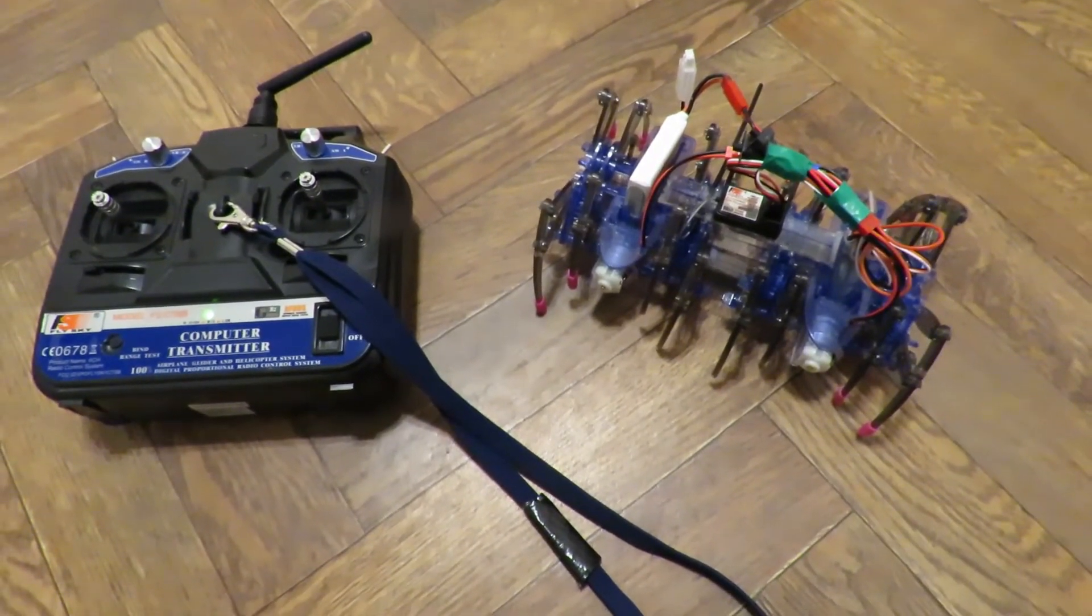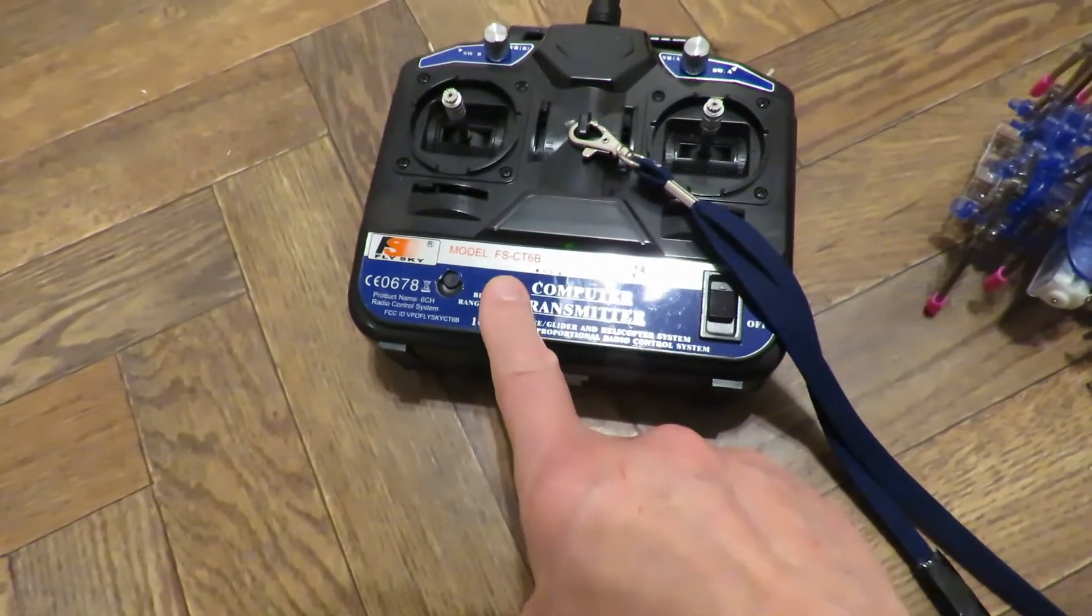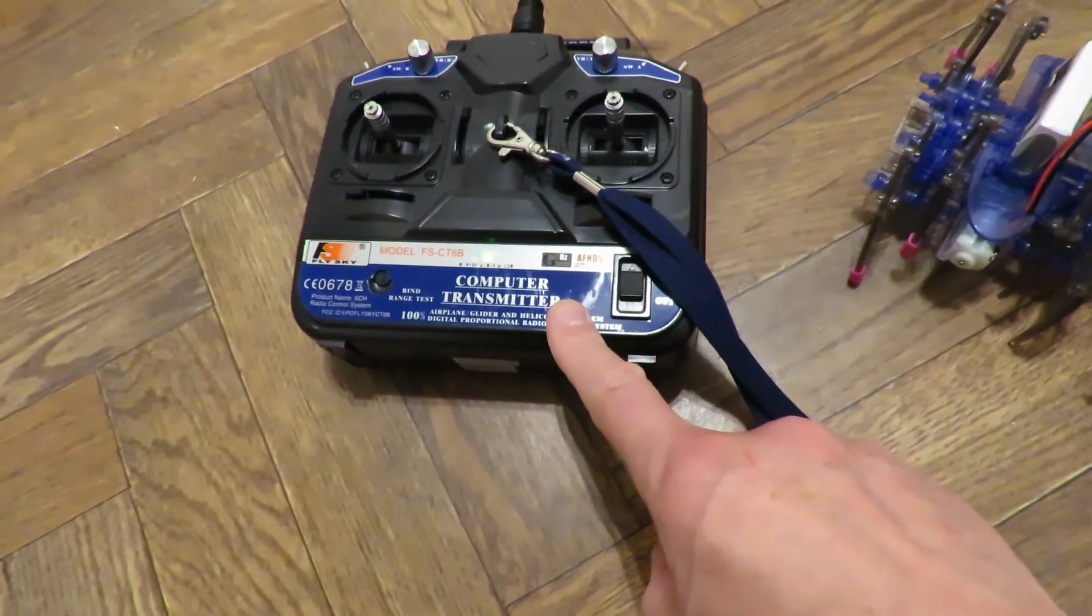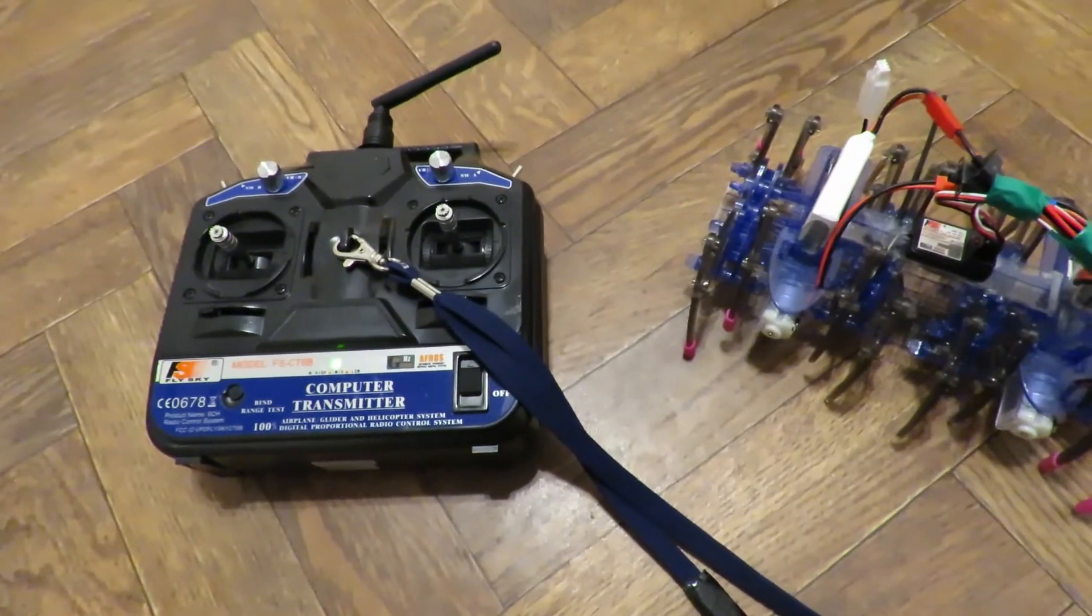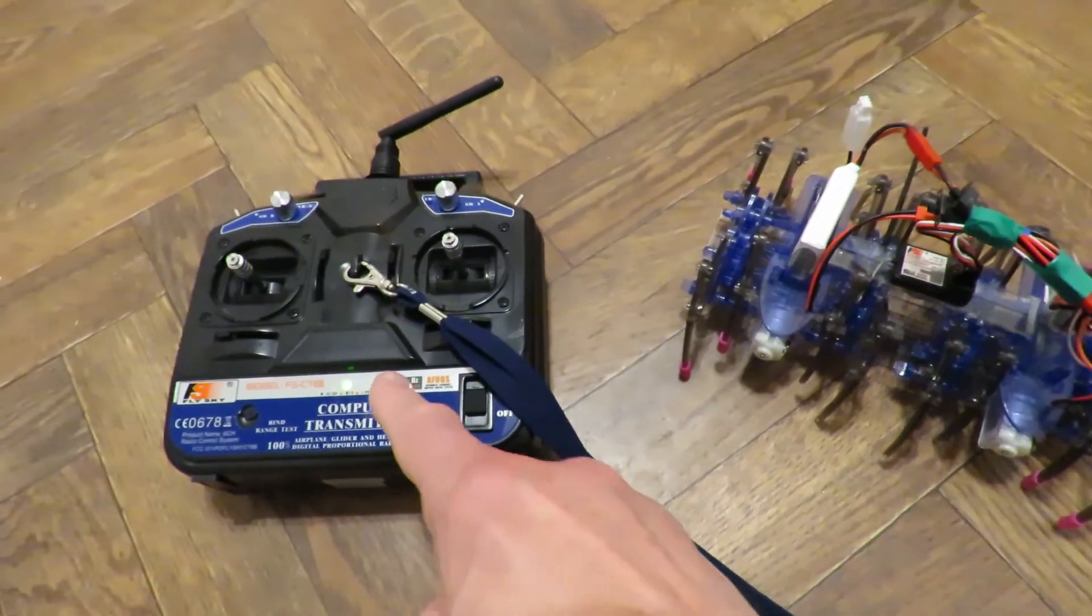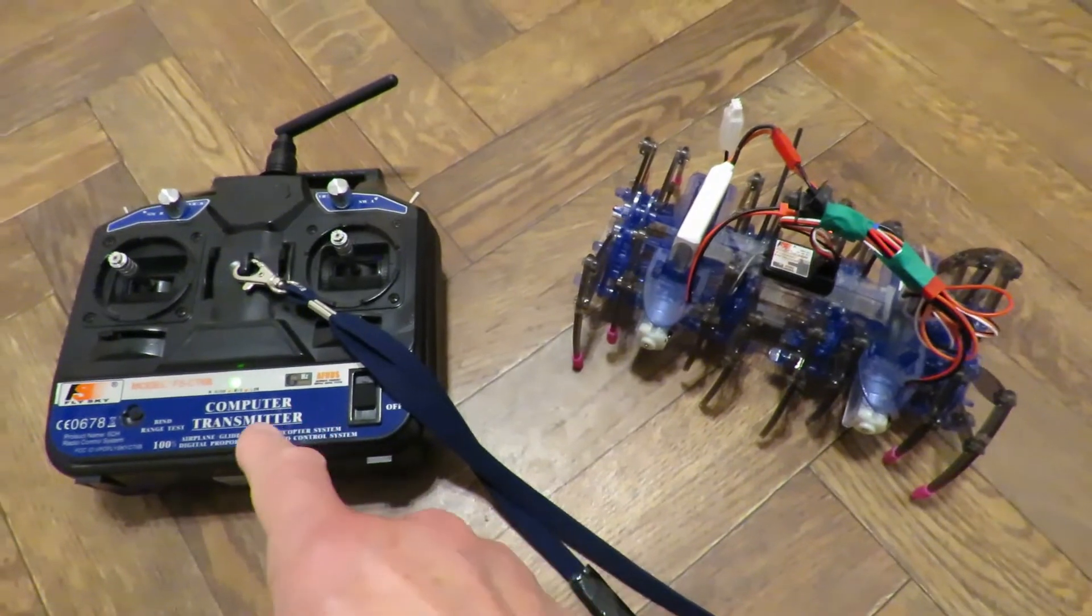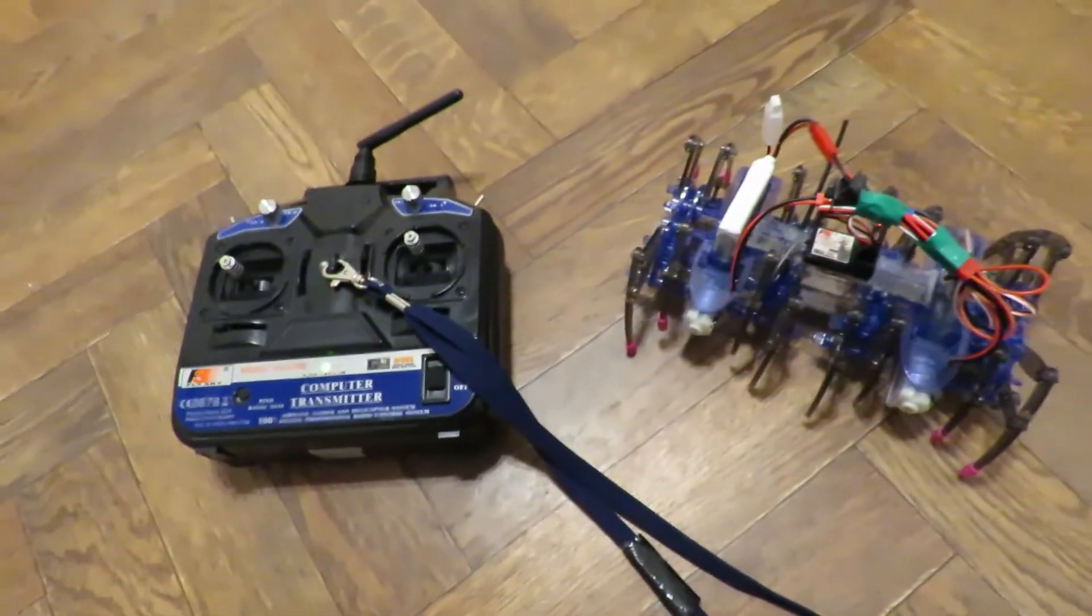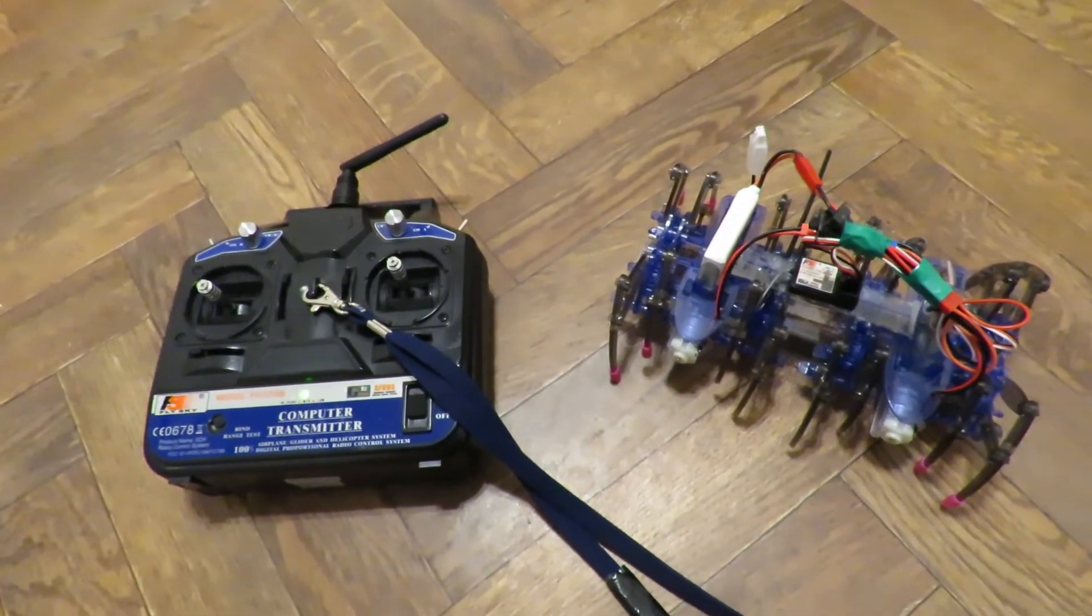Oh, just out of interest, this is my Fly Sky CT6B, the one that you have to plug into the computer every time you want to change anything. I've been having some discussion with somebody about that recently. I hate it, it's just far too much trouble having to plug it into the computer to be able to do any binding, or not binding sorry, mixing or anything like that on it.